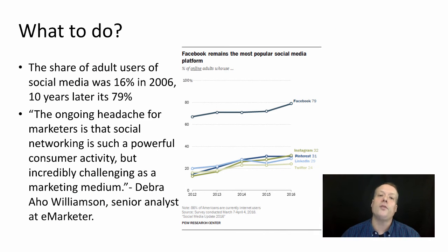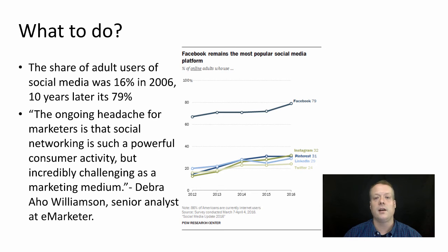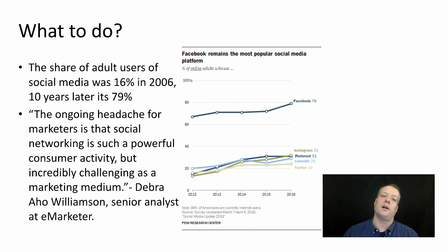The growth of social media has been huge. About 16% of adult individuals in the United States in 2006 were users of social media, primarily Facebook. Ten years later, that number is at 79% — we've seen gigantic growth in this space to the point where it's almost saturating the entire adult U.S. consumer population. The ongoing headache for marketers, according to Deborah Williamson, is that social networking is such a powerful consumer activity, but it's incredibly challenging as a medium. We are going to spend this course talking about what the challenges are, what the benefits are, and how you can mitigate the challenges while exacerbating the benefits as much as possible.